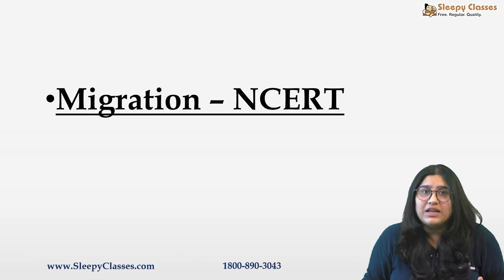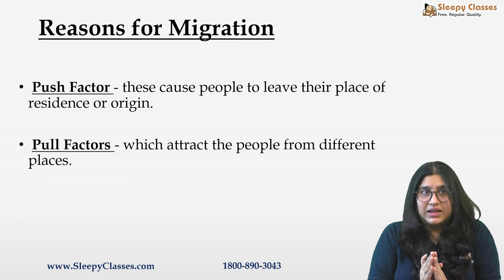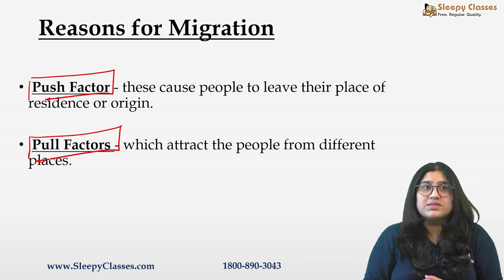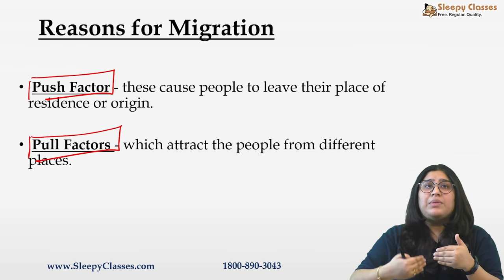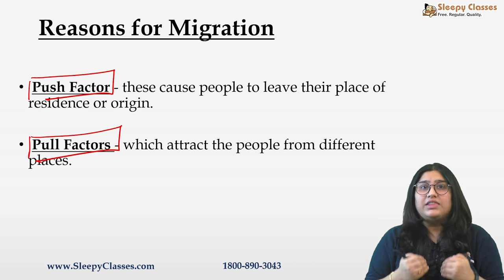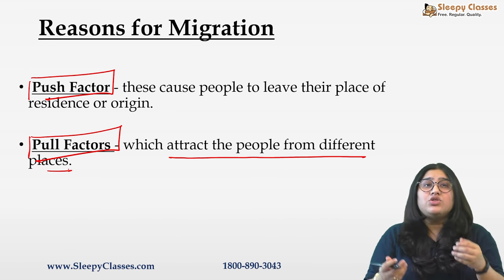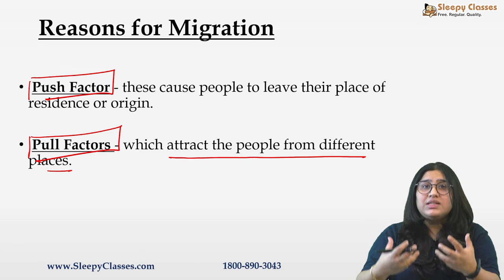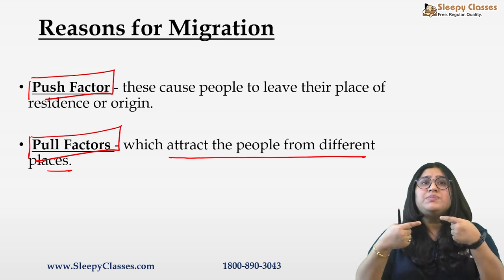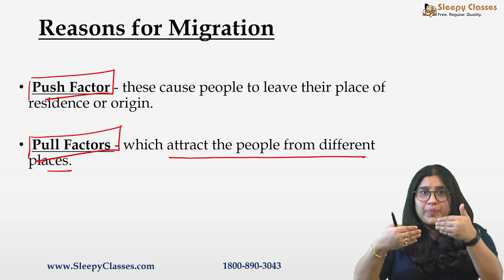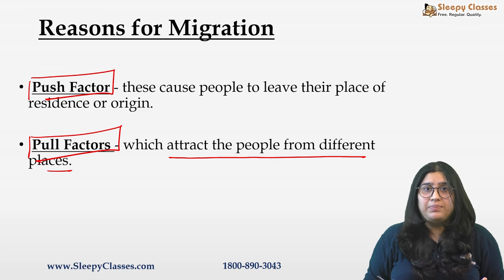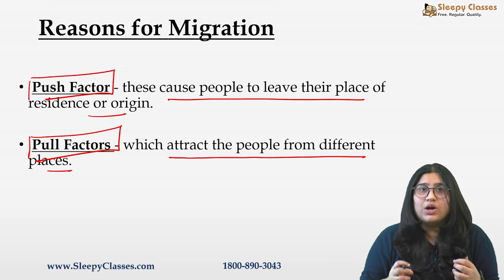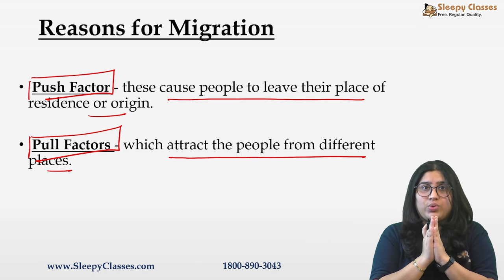सबसे पहले देखते हैं, migration के बारे में NCERT क्या कहती है। Class 12th की NCERT के अनुसार migration दो factors की वज़ह से होती है — कुछ होते हैं आपके push factors, कुछ होते हैं आपके pull factors। Pull factors वो होते हैं जो लोगों को अपनी तरफ attract करते हैं — these are those factors जो कि attract करते हैं लोगों को from different places। Push factors वो होते हैं जो people को उनके origin place से दूर कर देते हैं — because उनके origins में कुछ ऐसे factors होते हैं जिनके साथ वो और ज़्यादा नहीं रह पाते। अगर ऐसा question आपको prelims में आए, तो NCERT का यह content आपके काम आएगा।